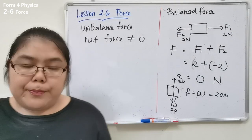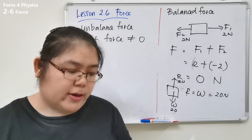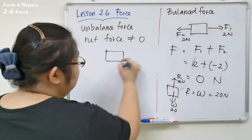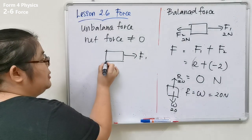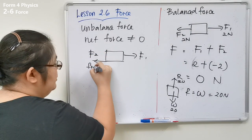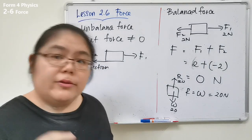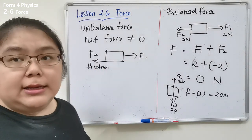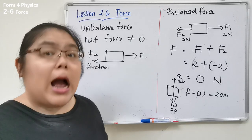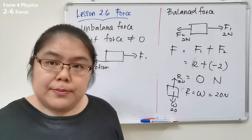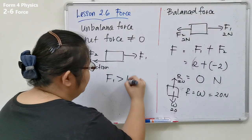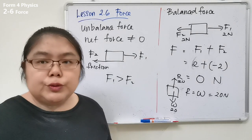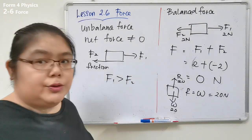When the forces acting on an object are not balanced, there must be a net force acting on it. For example, a box is pulled by F1 and resisted by friction F2. If this is an unbalanced force, the net force must equal something. F1 must be greater than F2 for the object to move. So net force = F1 − F2, giving a non-zero value.